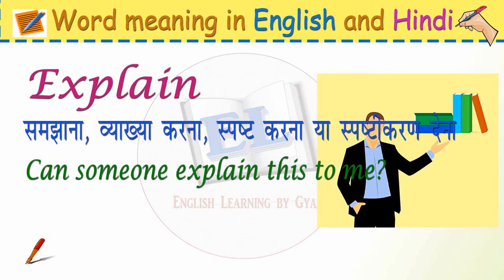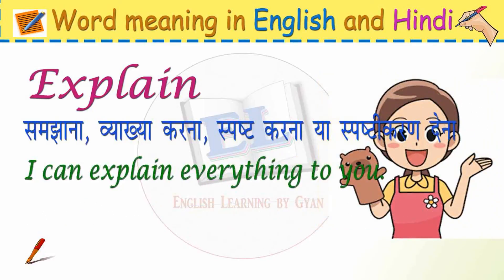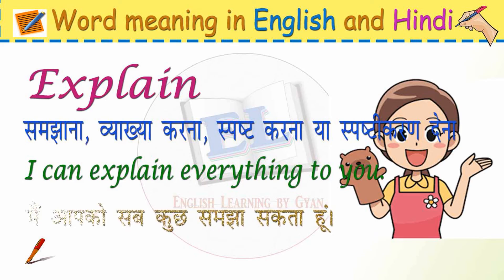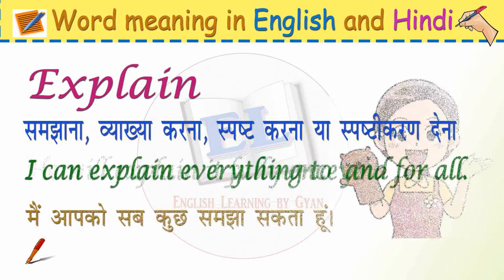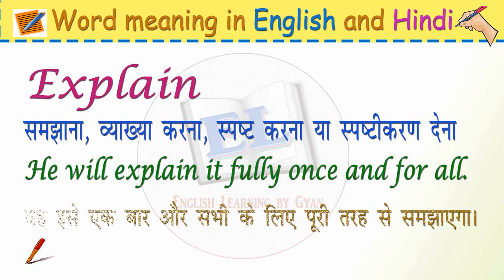Example sentences: Can someone explain this to me? Kya koi mujhe yeh samjha sakta hai? I can explain everything to you. Main aapko sab kuch samjha sakta hun. He will explain it fully once and for all. Wo isse ek baar aur sabhi ke liye puri tarha se samjhae ga.